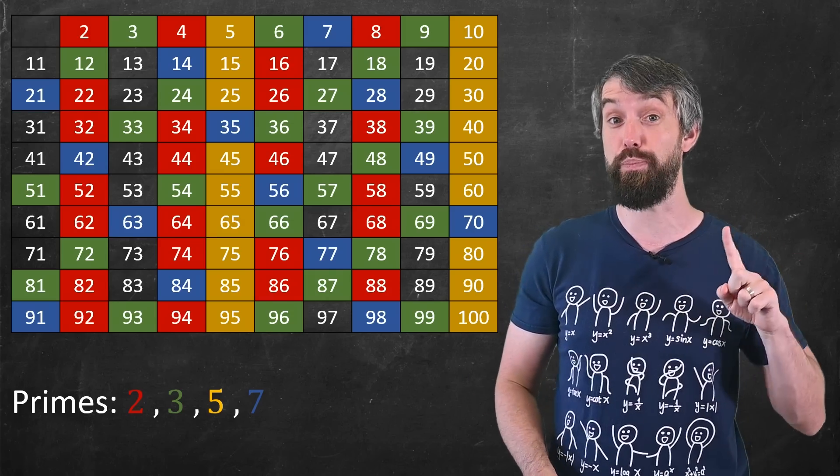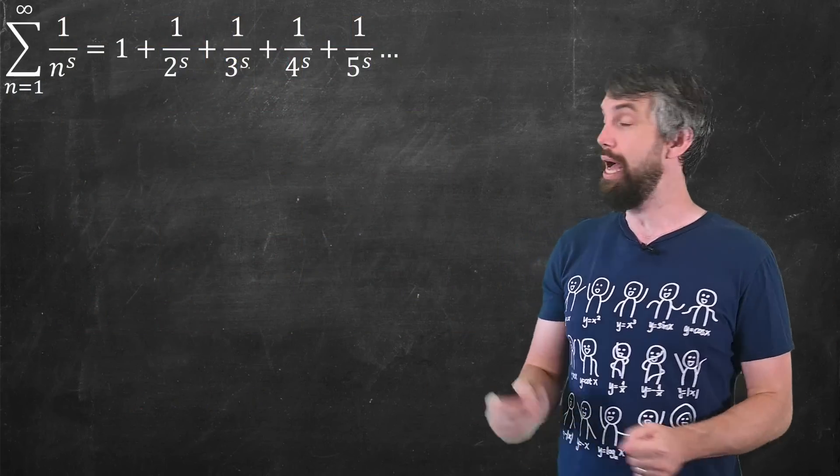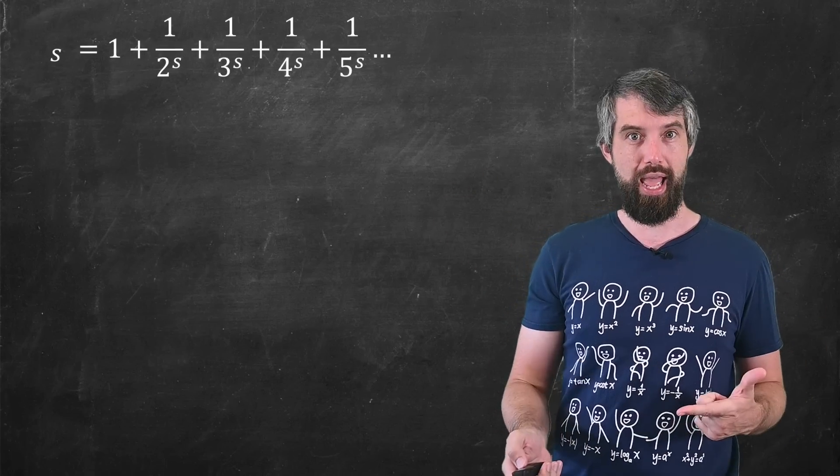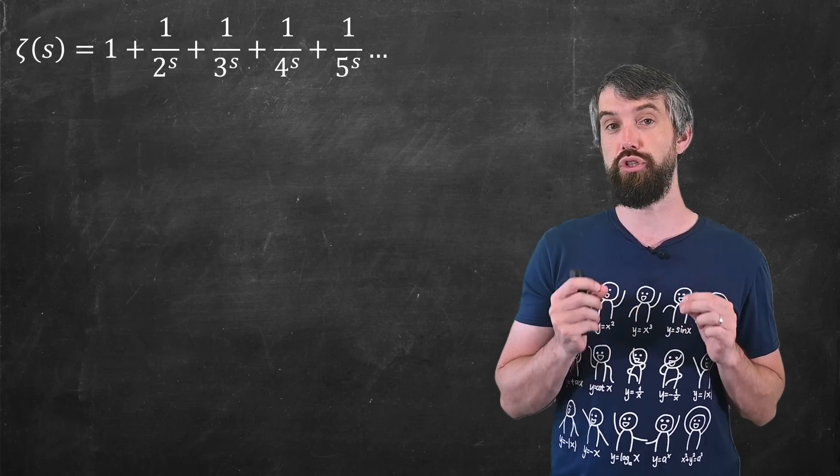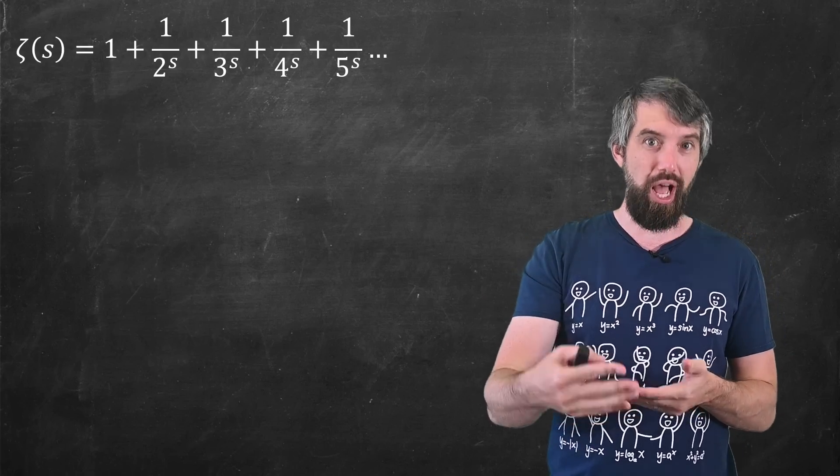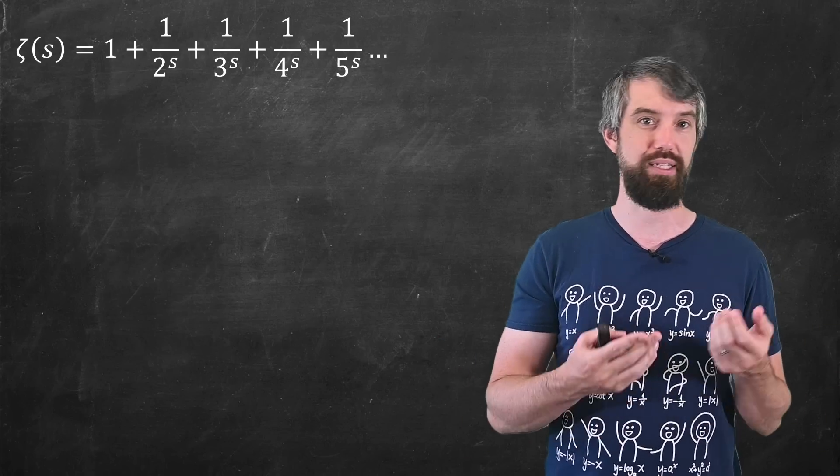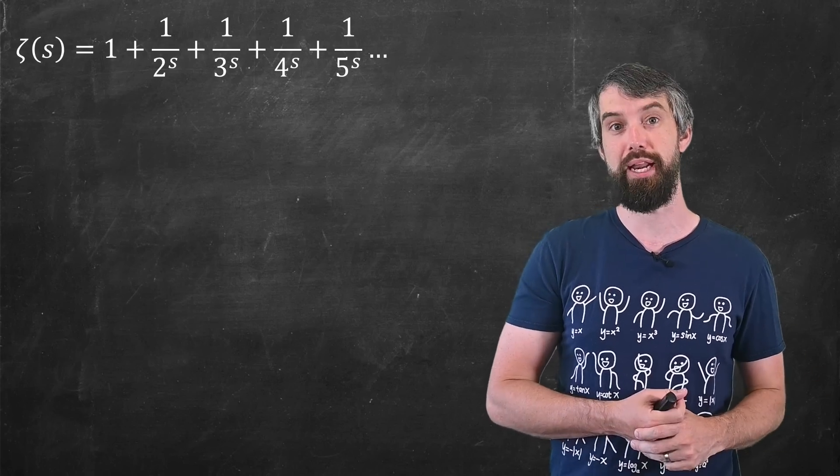So we're going to use this idea in the proof of Euler's product formula. Here is our summation. And I'm going to give it a shorthand so that I can sort of refer to this nice and cleanly. I'm going to give it the shorthand zeta of s. It's a function of the parameter s, and the common name for it is the Riemann zeta function.